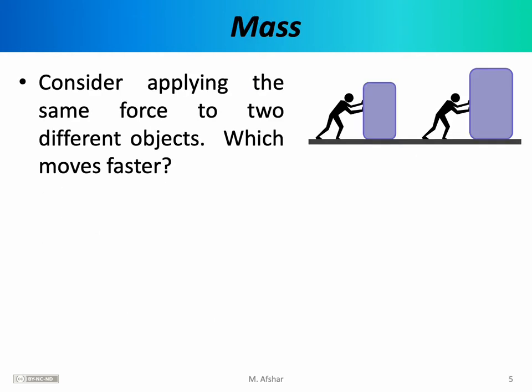Next, we want to discuss Newton's second law of motion. But before discussing the second law, we have to refine our understanding of what mass is. To do that, imagine applying the same force to two different objects — a small crate on the left and a big one on the right. You apply the same force, let's say 100 newtons to each crate, and you want to know which one will move faster as a result of that force.